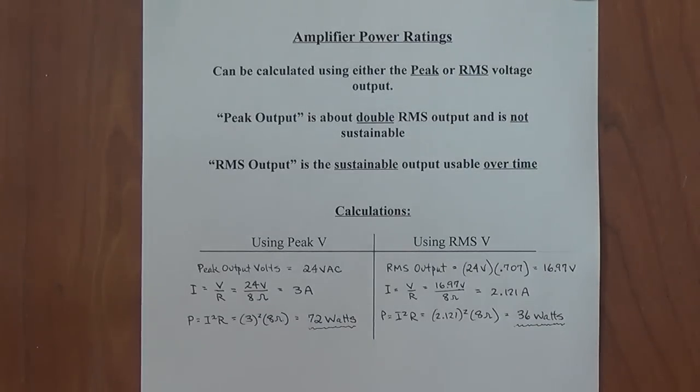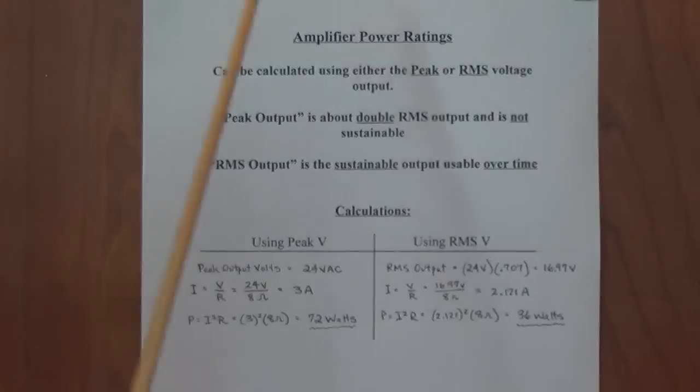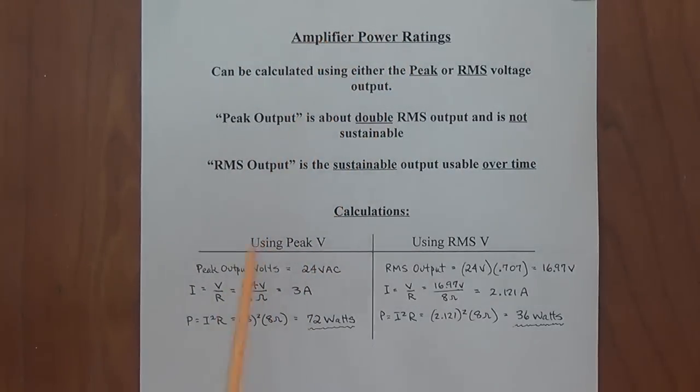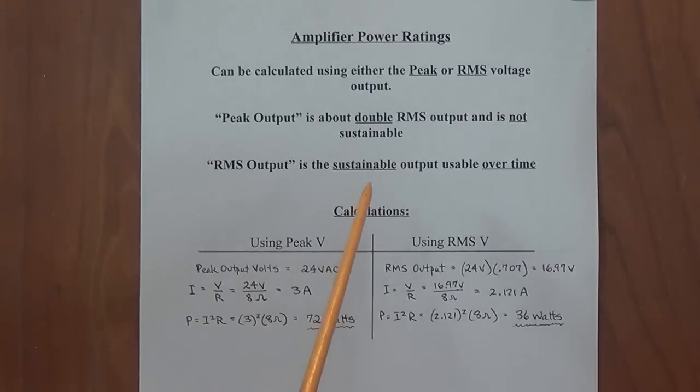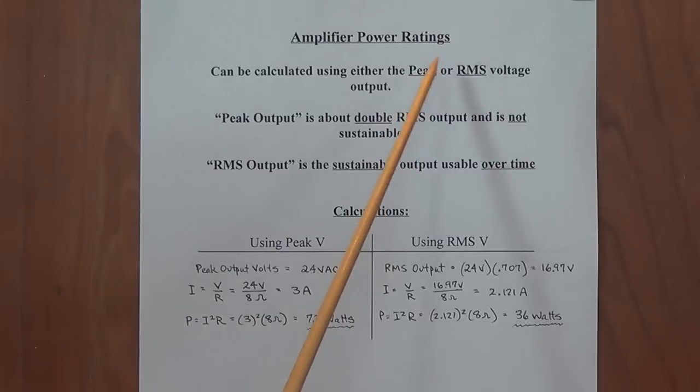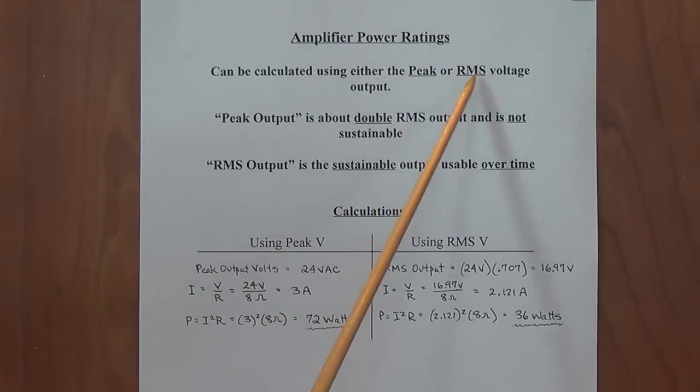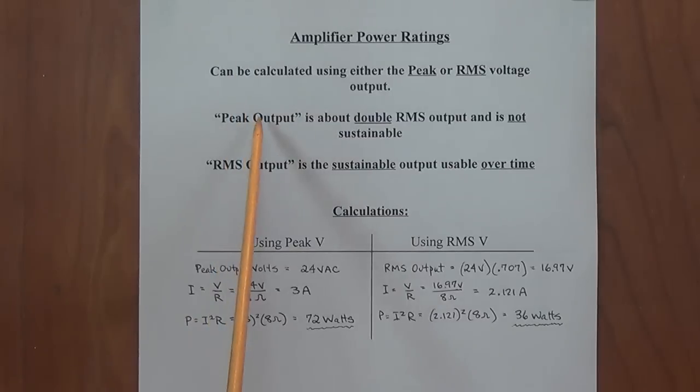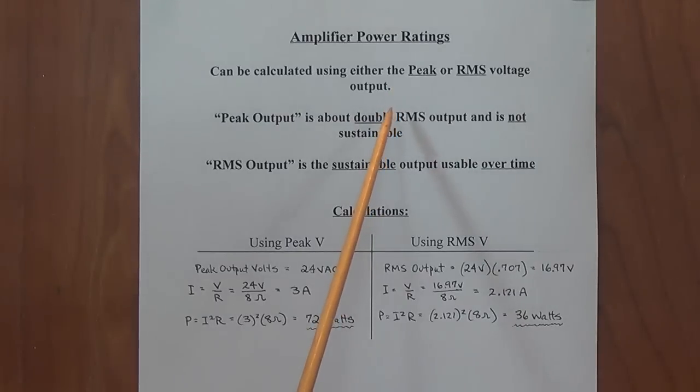Now like I said, we can apply this knowledge not just to understanding wall current, the wall receptacle in our house or workshop, but it also can be applied to the output power ratings of amplifiers. Remember that the signal that comes out of the amp is a sine wave, and it has a peak and trough value. Now manufacturers can calculate the power rating of amplifiers based either on the peak or the RMS voltage output. Now if they use the peak output, we've already seen that is not sustainable. Yes, that amp may be able to put out a 50 volt peak for a split second, but it can't do it for any length of time.